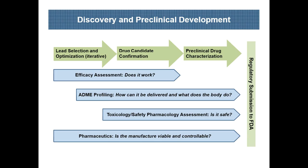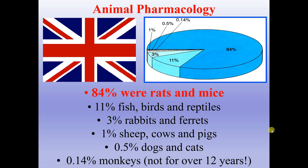Regarding the statistics of animals chosen for these preclinical researches in Great Britain: 84% were rats and mice, around 11% fish, birds, and reptiles, 3% rabbits and ferrets, 1% sheep, cows, and pigs, 0.5% dogs and cats, and 0.14% monkeys not older than 12 years. These animals were chosen for providing preclinical research.